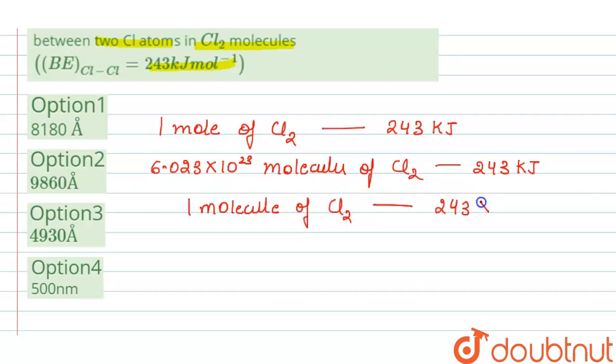243 times 10 raised to the power of 3, if we convert this kilojoules into joules, divided by 6.023 times 10 raised to the power 23.